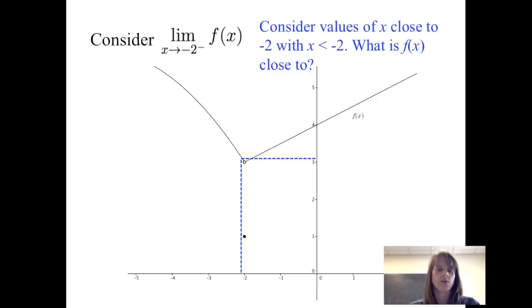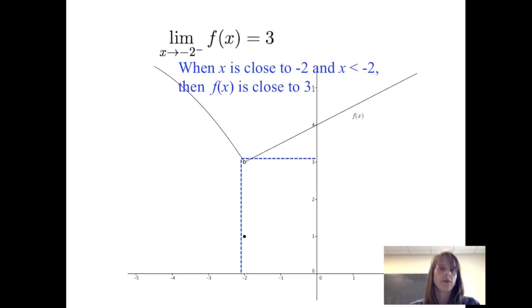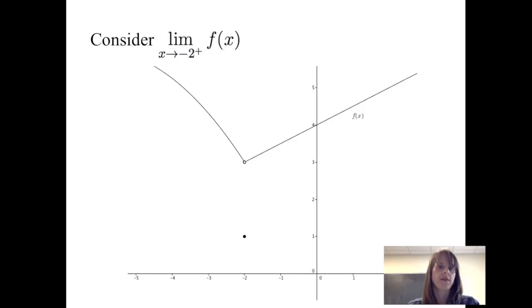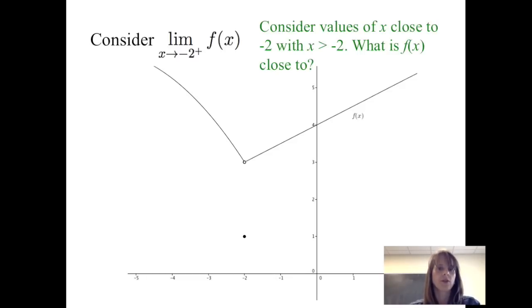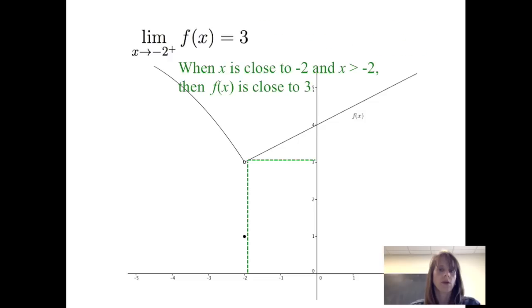As x is approaching and getting closer to negative 2 from the left, f of x is getting closer to 3. So we can write that the limit of f of x as x approaches negative 2 from the left is equal to 3. Now let's consider the limit of f of x as x approaches negative 2 from the right — what happens to f of x when x is closer to negative 2 and x is greater than negative 2. We can see that the limit of f of x as x approaches negative 2 from the right is also equal to 3.